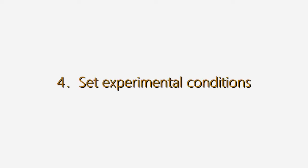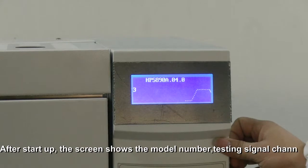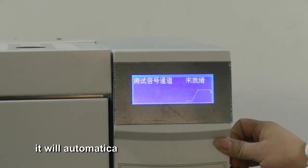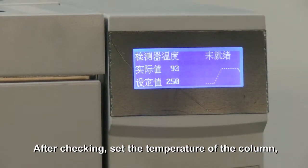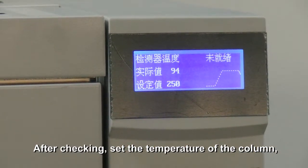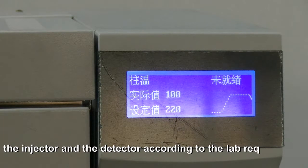Set experimental conditions. After startup, the screen shows the model number testing signal channel. It will automatically go to the self-checking program. After checking, set the temperature of the column, the injector, and the detector according to lab requirements.